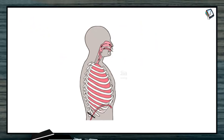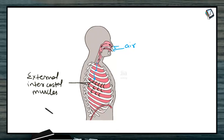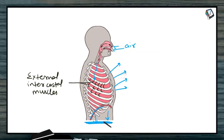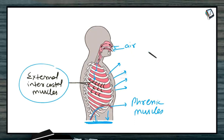Let us now discuss inhalation using a diagram. The arrows show air moving in, reaching the lungs. Between the ribs, external intercostal muscles are present; their contraction pulls the ribcage outward — forward and upward along the dorsal-ventral axis. The diaphragm is shown here; when the phrenic muscles contract, the diaphragm gets straightened, pulled down along the anterior-posterior axis. This results in an increase in volume, which finally results in inhalation. During inhalation, the ribcage moves forward and upward while the diaphragm moves downward, together causing an increase in volume, decrease in pressure, and inflow of air.